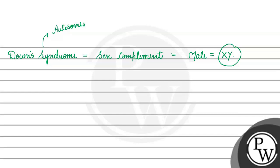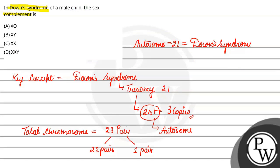Dekho Down syndrome hone se ye affected hoga aisa kahin nahi likha. Haan, autosome affected hoge wo bhi 21st pair wale, otherwise koi aur nahi hoga. So the correct answer in the given question is option B, XY.